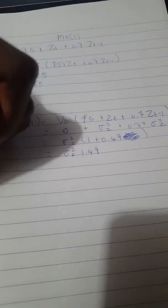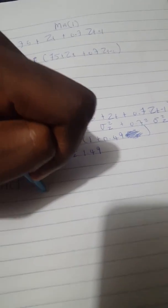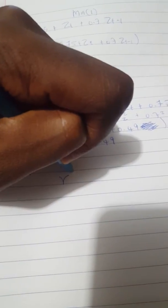Now, we'll move on to ACF. So we'll have gamma K over gamma naught.